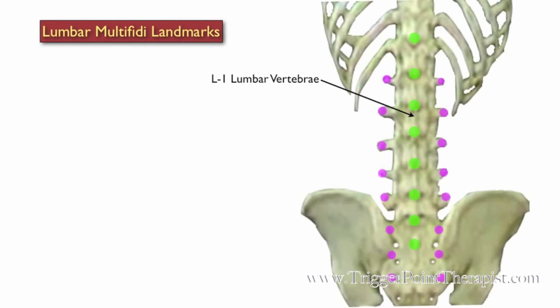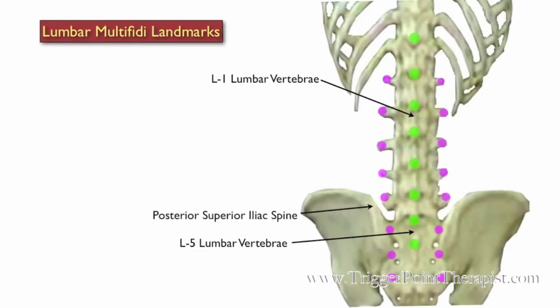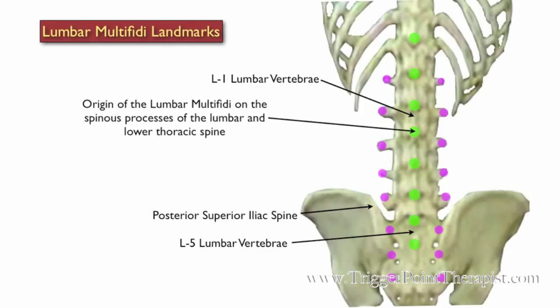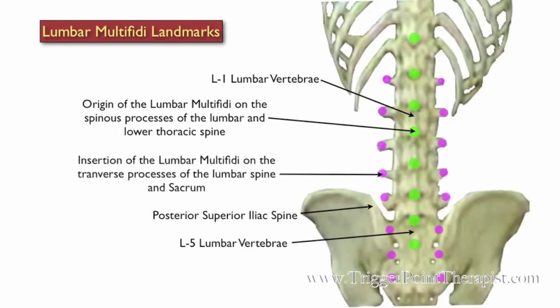Here are the landmarks for the Lumbar Multifidi. First, we have the L1 lumbar vertebrae and the L5 lumbar vertebrae and the posterior superior iliac spine, or PSIS. The Lumbar Multifidi originate on the spinous processes of the lumbar and lower thoracic spine, and they insert on the transverse processes of the lumbar spine and the sacrum.